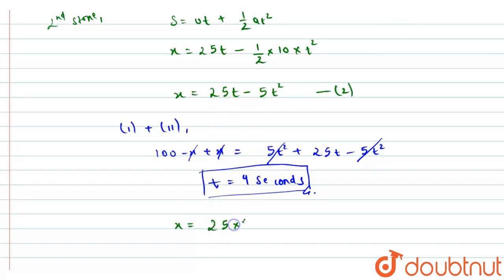So I will get here 25 into 4 minus 5 into 4 square that is 16, so we will get x equals to this is 100 minus 80, so that is 20 meters. So we have found the value of x equal to 20 and x we measured from the ground.